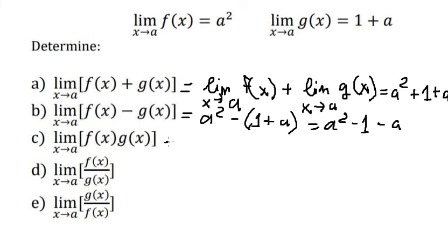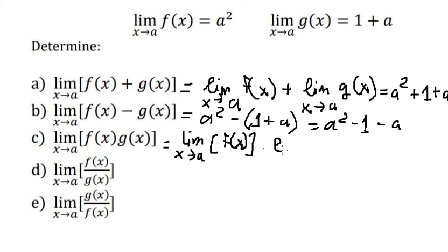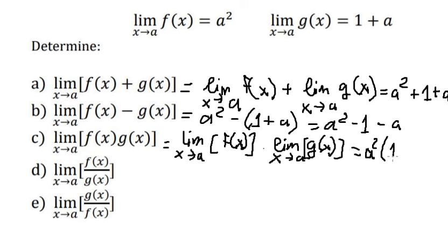This one we will write about the limit s approach to a of this function f of s, multiplied by the limit of s approach to a of g of s. So in this situation we will have a square multiplied by one plus a.